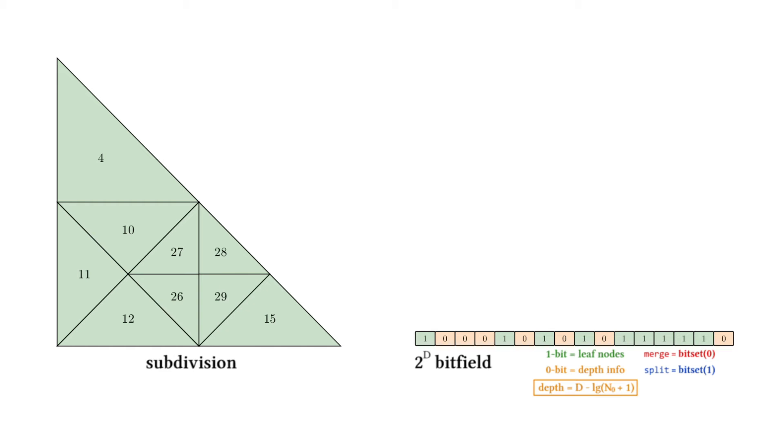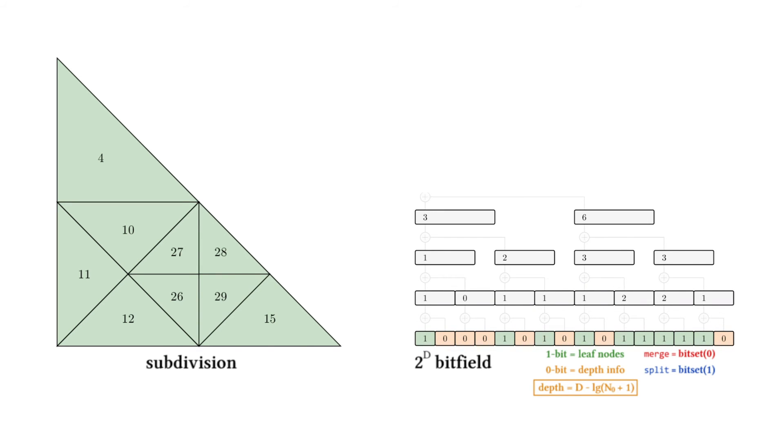In order to process LEB in parallel, we dispatch a thread for each bit set to 1 in the bit field. To make this dispatching efficient, we compute the reduced sum of the bit field and store it on top of the bit field. This additional information allows us to both retrieve the number of leaf nodes and map each thread to its associated leaf node using a binary search algorithm.